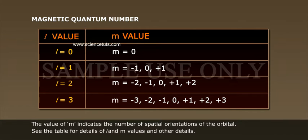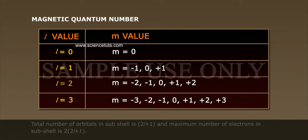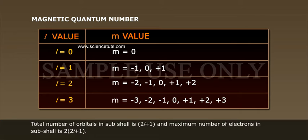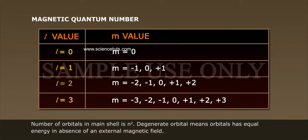See the table for details of l and m values and other details. Total number of orbitals in sub-shell is 2l plus 1, and maximum number of electrons in sub-shell is 2 of 2l plus 1. Number of orbitals in sub-shell is n-square.